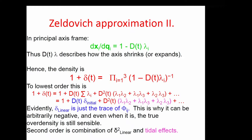This resolves the apparent problem that linear theory density can be −2.7 for voids: the correct expression has the linear density in the denominator (via 1 + δ_lin), so as λ_i → large negative values (expanding), the denominator grows, the nonlinear density goes to zero, never going negative. Linear theory density is really encoding the velocity divergence, not the physical density.